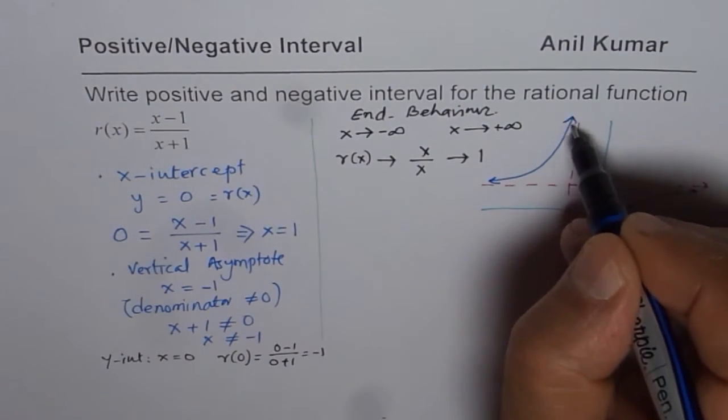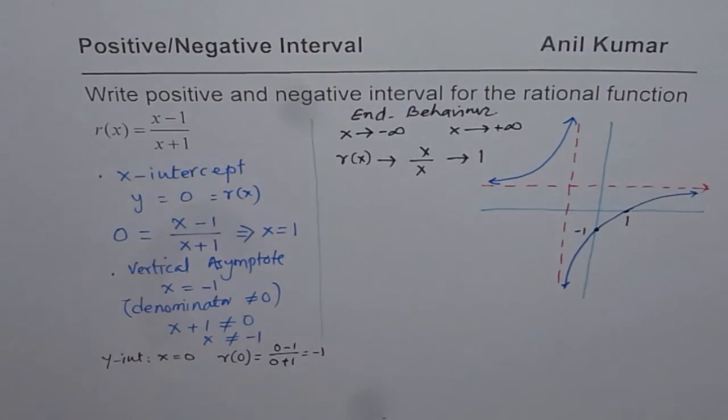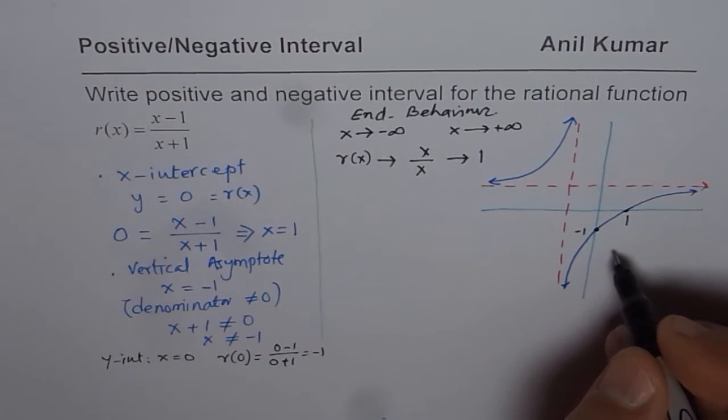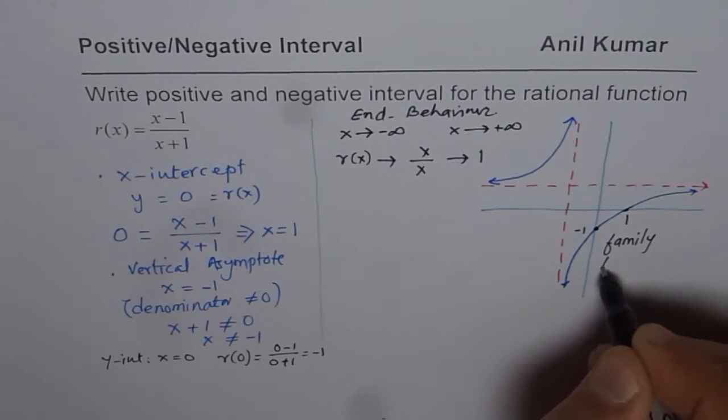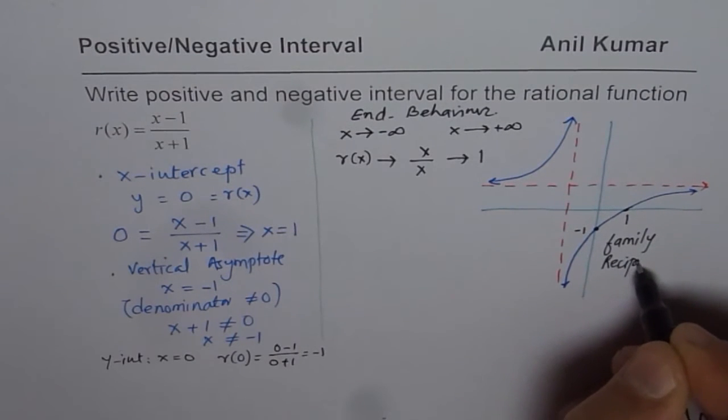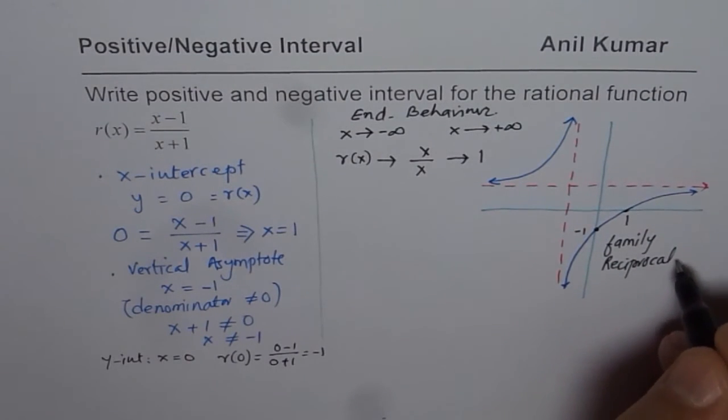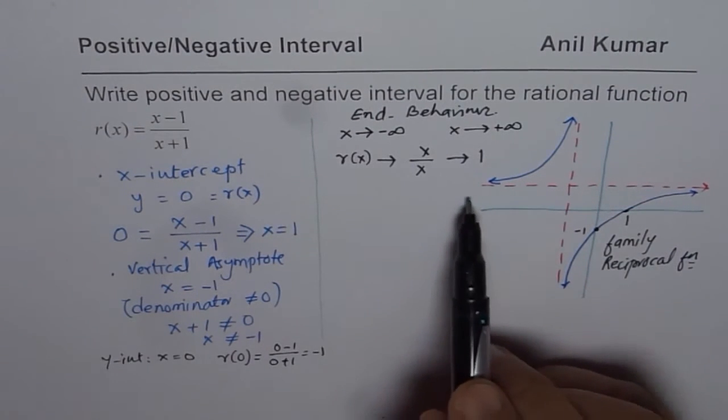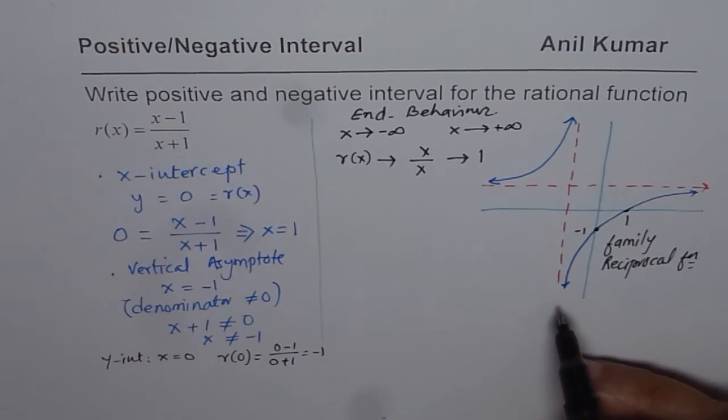Now, how do you get this curve? It is similar to reciprocal function. So the parent function is a reciprocal function. So how do you get the shape? Shape is you can say family of reciprocal function. So the shape will be as per that. And we already found horizontal and vertical asymptotes.